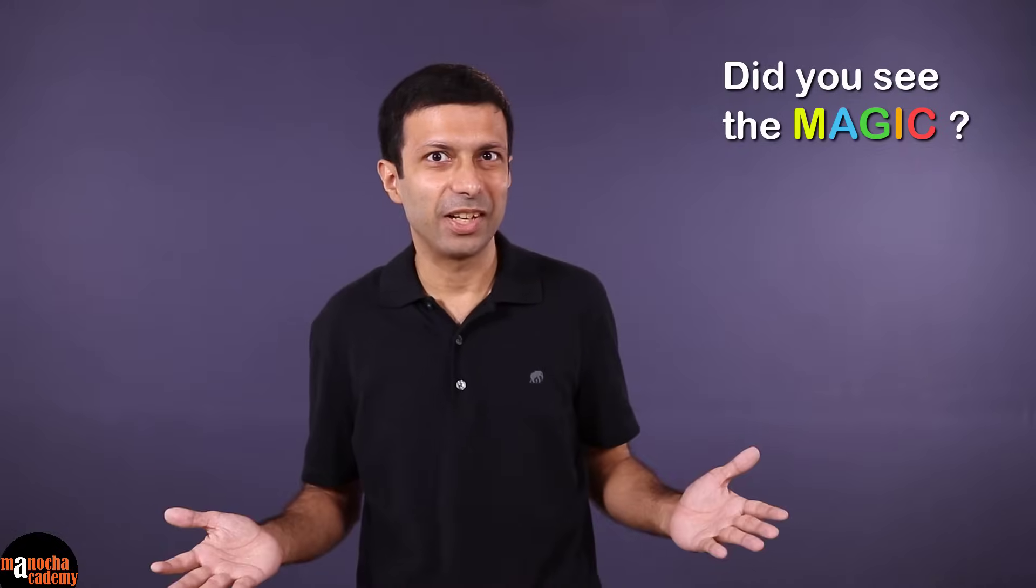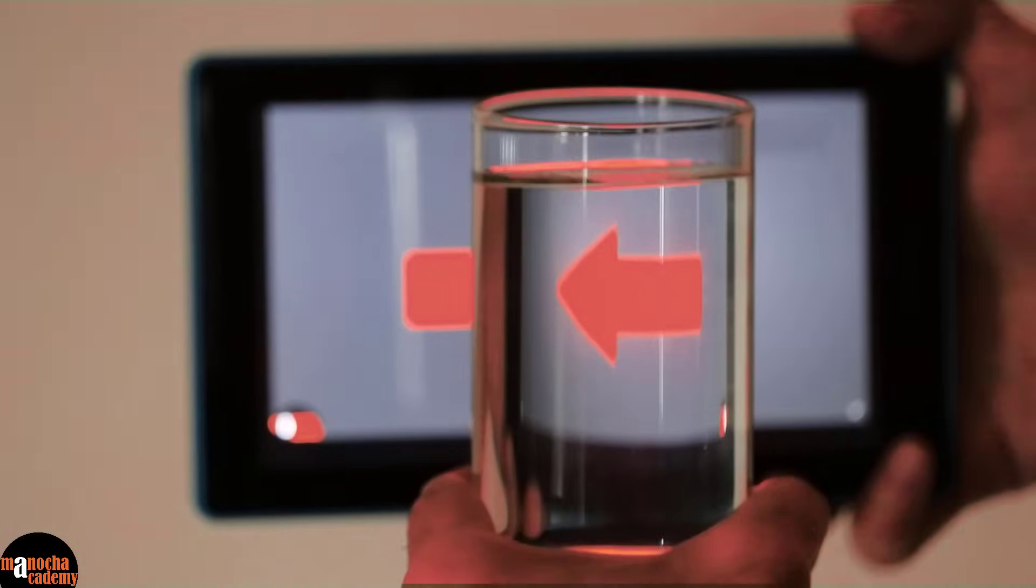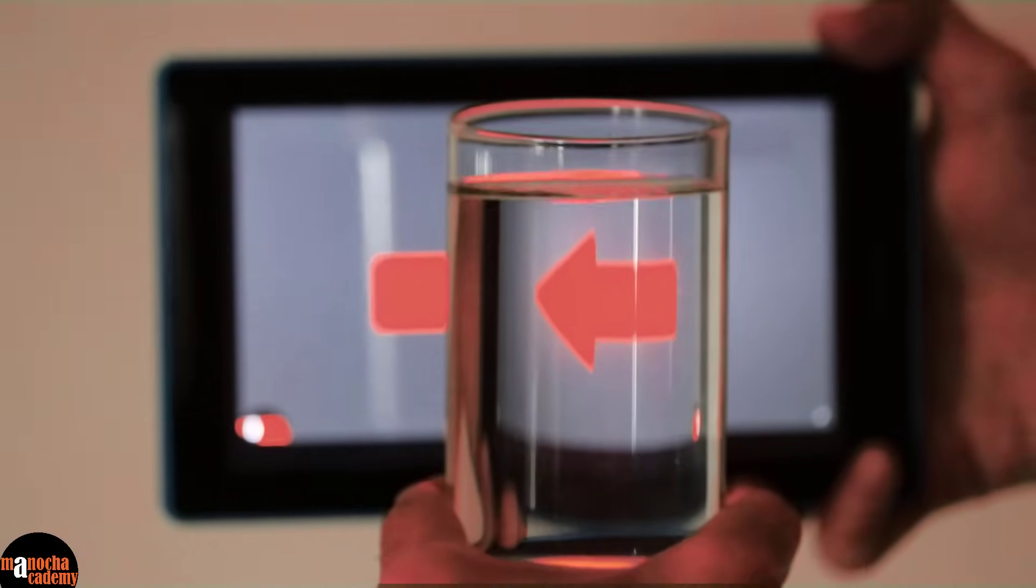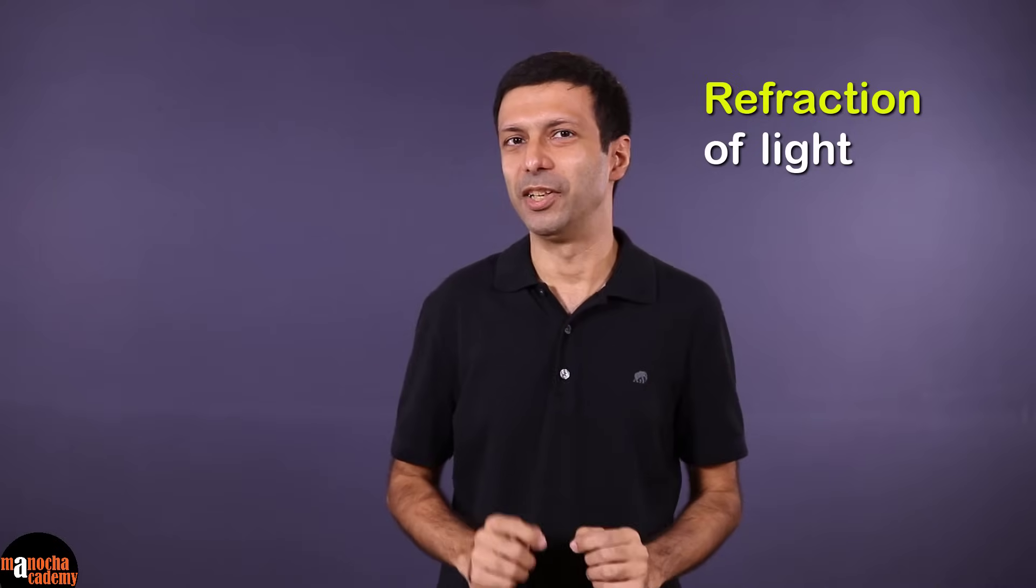Did you see the magic? Did you see the arrow changing its direction? It's happening due to bending of light. This is called refraction of light and it's going to be the topic of this video.